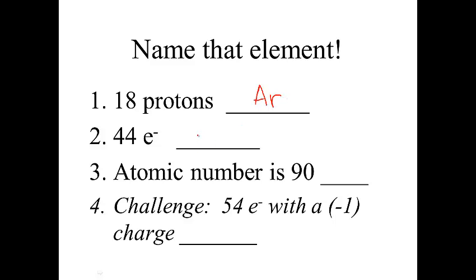44 electrons, we would assume that there is no charge on the atom. So in that case, if it had 44 electrons, it would be the element ruthenium. Atomic number of 90, this one is thorium.